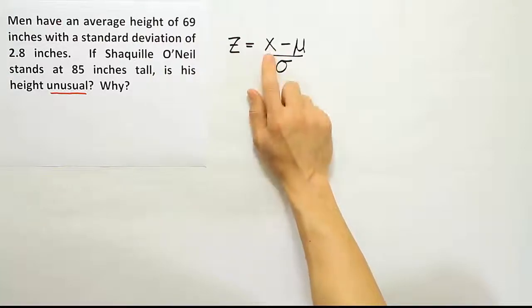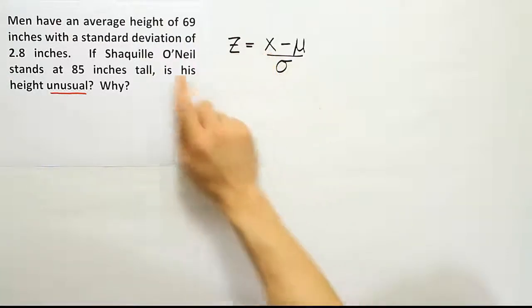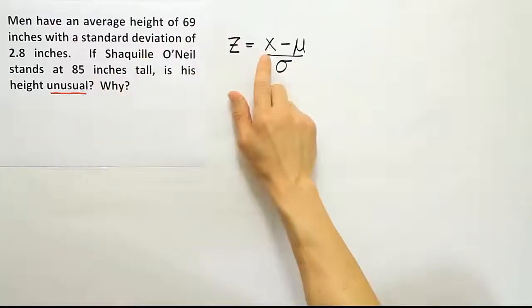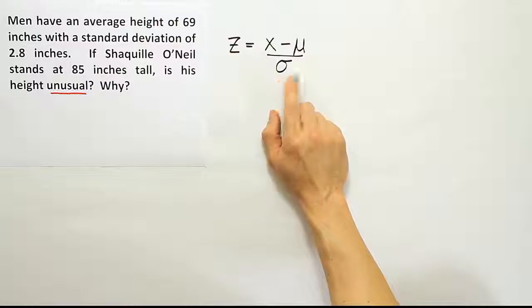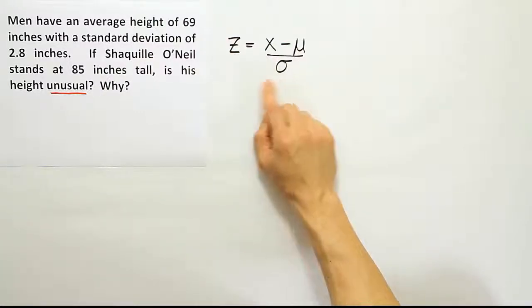The reason we're doing this is we want to say, okay, Shaquille O'Neal's height of 85 inches, how far away from the mean is it? And then we're going to express that distance in terms of standard deviations. So by dividing it into standard deviations, we'll be able to tell how many standard deviations it is above average.